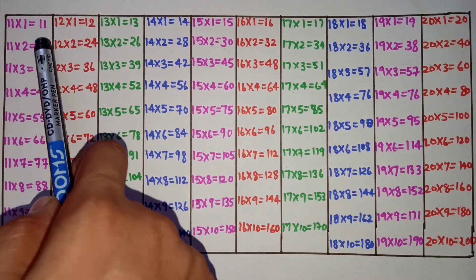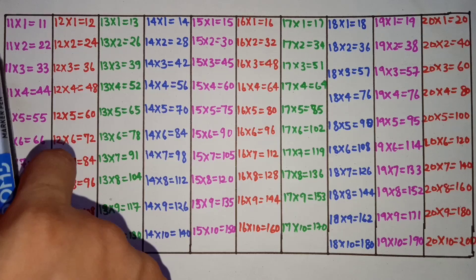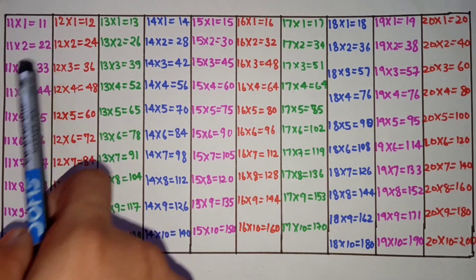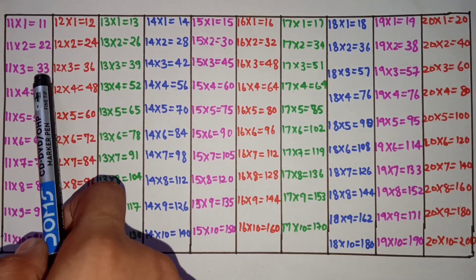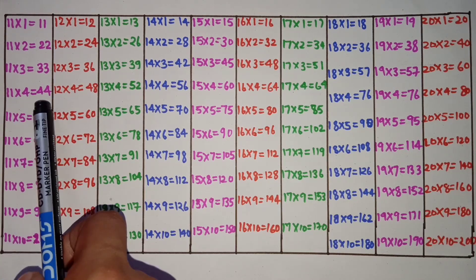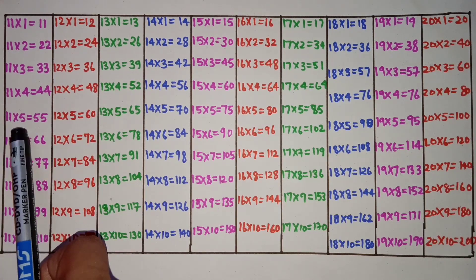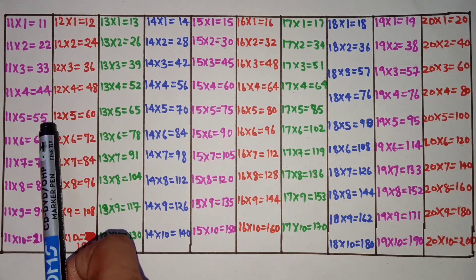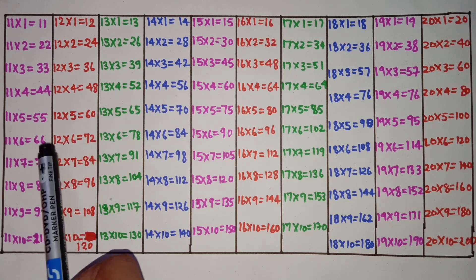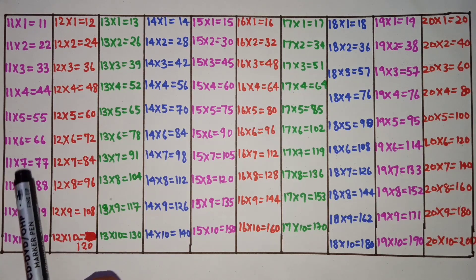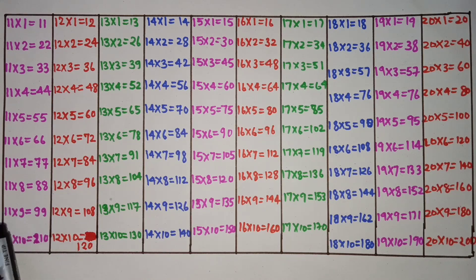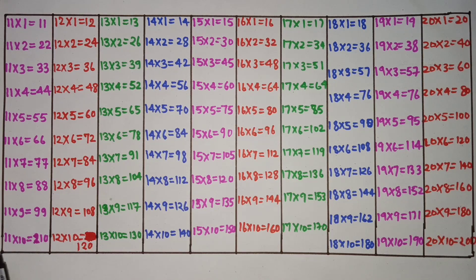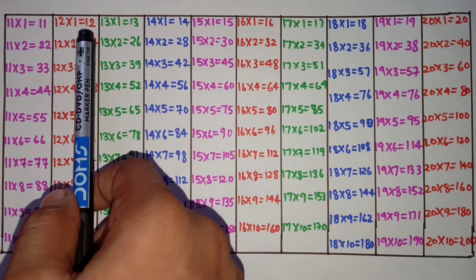11×1 is 11, 11×2 is 22, 11×3 is 33, 11×4 is 44, 11×5 is 55, 11×6 is 66, 11×7 is 77, 11×8 is 88, 11×9 is 99, 11×10 is 110.